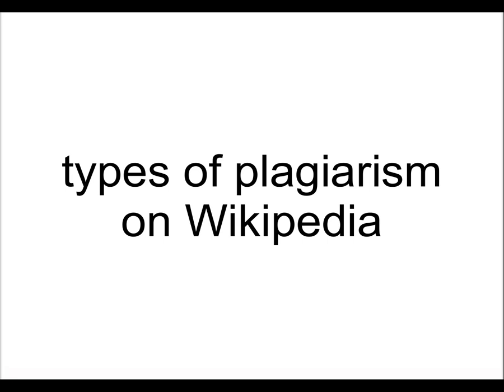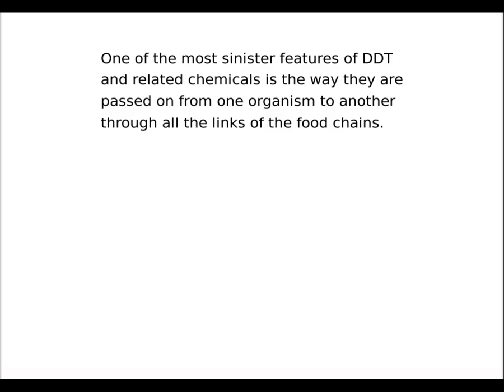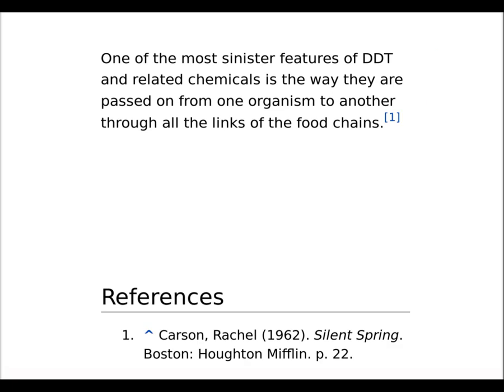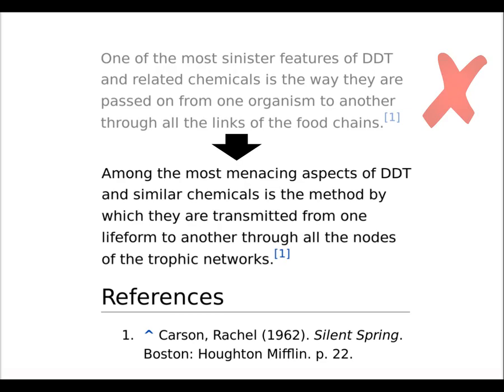If you're improving an article that others started, you may come across some of these types of plagiarism. First, unattributed plagiarism — this is when text is copied into Wikipedia from another source, but there's no indication of where it came from. Then plagiarism of cited sources: if a footnote is added to show where information came from, but it still keeps the exact wording of the source, that's another common form of plagiarism.